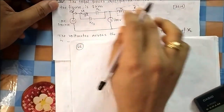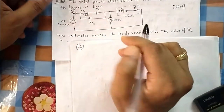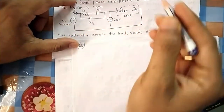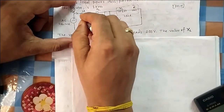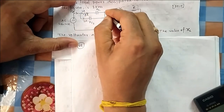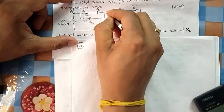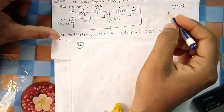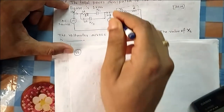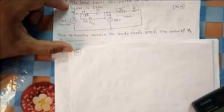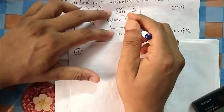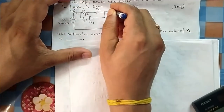In question number 66, it is asked: the total power dissipated in the circuit shown in the figure. As you can see in the circuit, 10 ampere is given here, 2 ampere is given here, so 8 ampere will be the current flowing through this branch, and then again 2 ampere and again 10 ampere. A voltmeter is connected across the load.